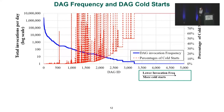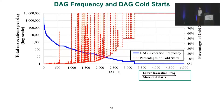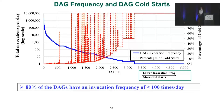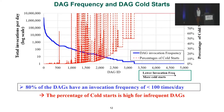Third, when we study cold starts, we notice a big impact of DAG invocation frequency on cold starts. Here we show invocations per day on the primary y-axis and the corresponding percentage of cold starts on the secondary y-axis. There is a lower invocation frequency that follows a Zipf distribution — with lower invocation frequency there are more and more cold starts. Specifically, 80% of DAGs have an invocation frequency of less than 100 times per day, and those experience high percentages of cold starts.